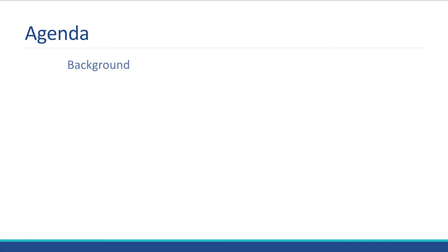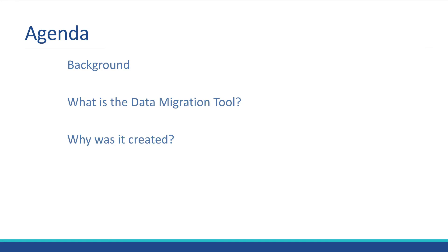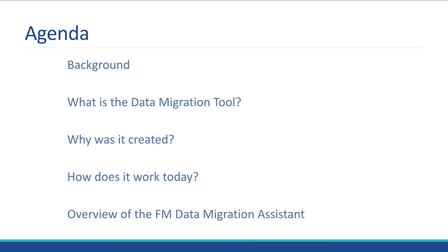In this video, we're going to talk first about the background of this situation and exactly why you would need these tools. Then we'll talk specifically about what the data migration tool is exactly and why it was created. Then we'll move on to how that tool works today, the one released from FileMaker. And then we'll briefly touch upon the overview of the FM Data Migration Assistant, which is a tool add-on that we use as a FileMaker file that gives a user interface to the migration tool from FileMaker.